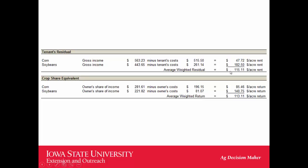Looking at the crop share equivalent method, the spreadsheet charges the landowner half of the fertilizer cost, half the seed cost, and half the chemical cost. It charges all the machinery costs and all the labor to the tenant, then splits the income half and half. On corn, half the income was $281, and half the expenses that the landlord participates in was $196.